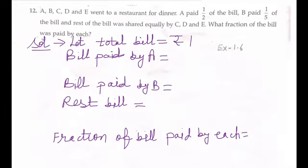Hello friends, in this video we are going to solve question number 12 of exercise 1.6. The question is: A, B, C, D, E went to a restaurant for dinner. If A paid half of the bill...